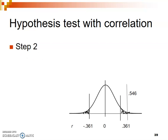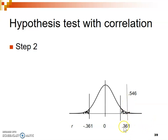In step two we established our distribution and shaded in the critical region. Our value calculated in step three was 0.546, which falls within the critical region — that value of 0.546 is more extreme, or larger, than the critical value line drawn at 0.361. Our value is bigger than that, so it falls within our critical region.